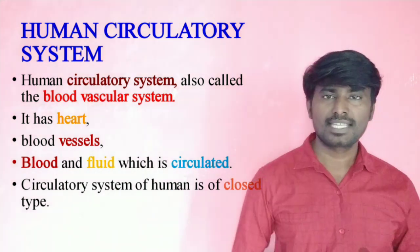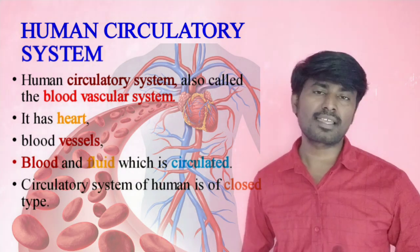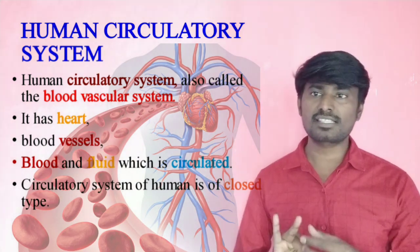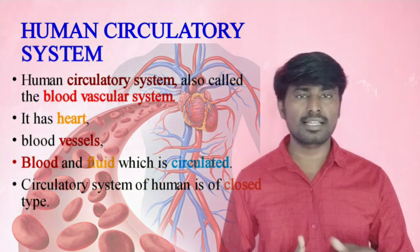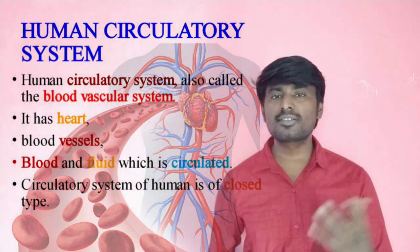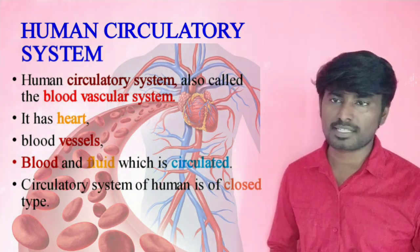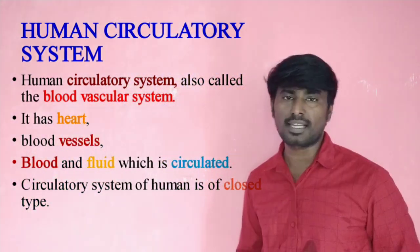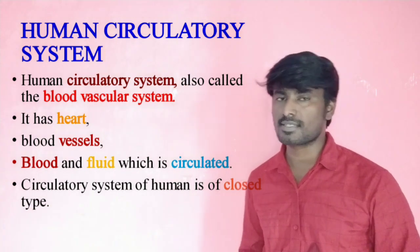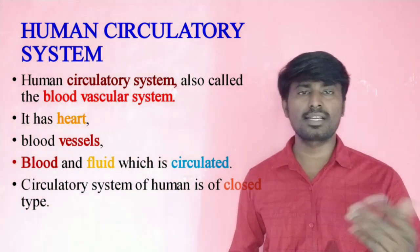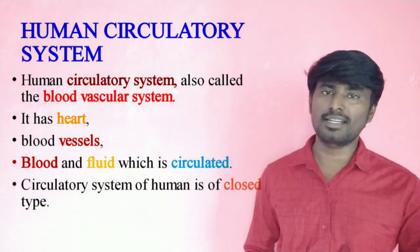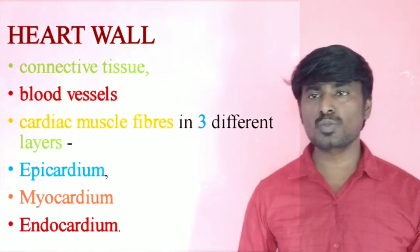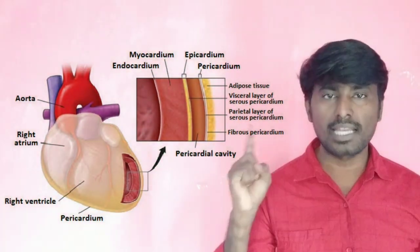It has a heart. Next one — Heart wall. It is just one. This is called cardiac tissue.